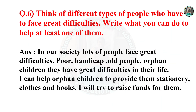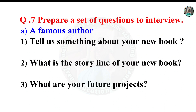Question 6: Think of different types of people who have to face great difficulties. Write what you can do to help at least one of them. In our society, lots of people face great difficulties - poor, handicapped, old people, and orphan children. I can help orphan children by providing them stationery, clothes, and books, and I will try to raise funds for them.